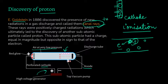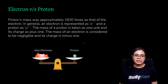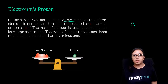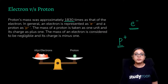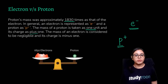Canal rays are the positively charged particles, equal in magnitude but opposite in sign to that of the electron. The electron is negatively charged and the canal rays — the protons — are positively charged. The proton's mass is approximately 1830 times that of the electron. In general, the electron is represented as e⁻ because it is negatively charged, and the proton as p⁺ because it is positively charged. The mass of a proton is taken as one unit with a charge of +1, while the mass of an electron is considered negligible with a charge of -1.